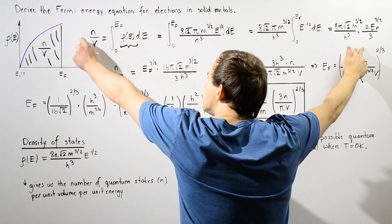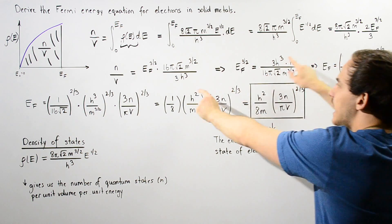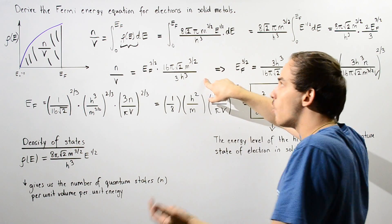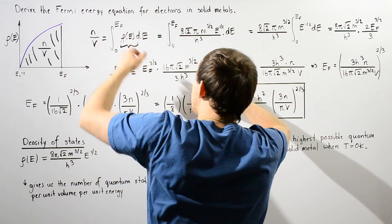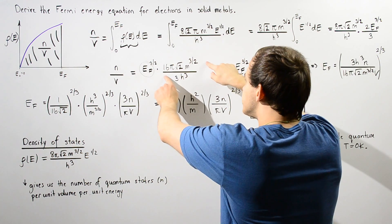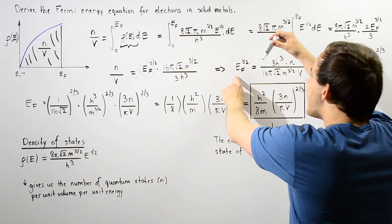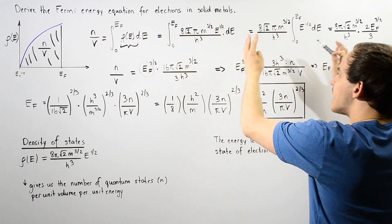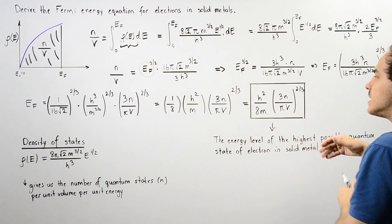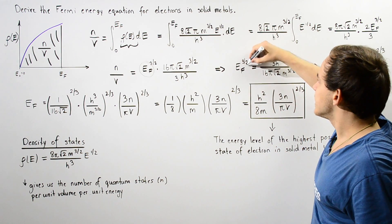We find that n divided by V is equal to a certain quantity, which can be rewritten in a cleaner format. Since we're looking for the equation for the Fermi energy, we solve for E_F: we bring the relevant term to the other side, then raise both sides to the power of 2, and then to the power of 1/3, with those exponents canceling appropriately.